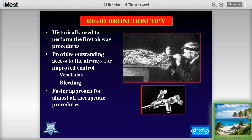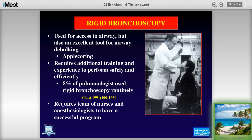Rigid bronchoscopy really started with Killian in the late 1800s. He started in cadavers because people said nobody could do this — he was actually kicked out of his international society when he first began doing rigid bronchoscopy and pulling foreign bodies from airways. Shigito Akita was using rigid bronchoscopy before he developed the machinoscope and eventually the flexible bronchoscope. He even developed a special chair just for doing rigid bronchoscopies.